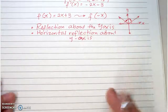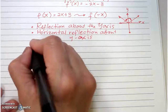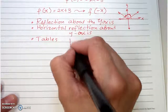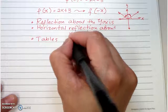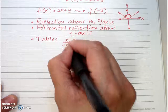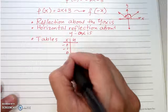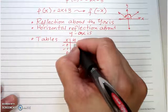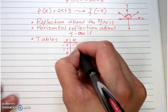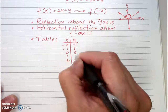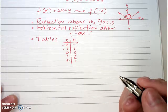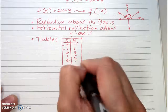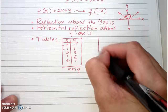Now let's go to the tables. The original table again uses the domain negative two, negative one, zero, one, two. We found that the range values are negative one, one, three, five, and seven. This is your original table.